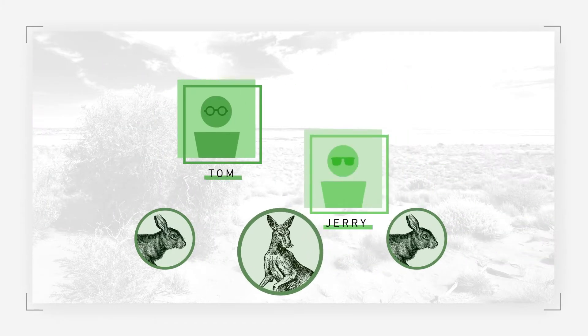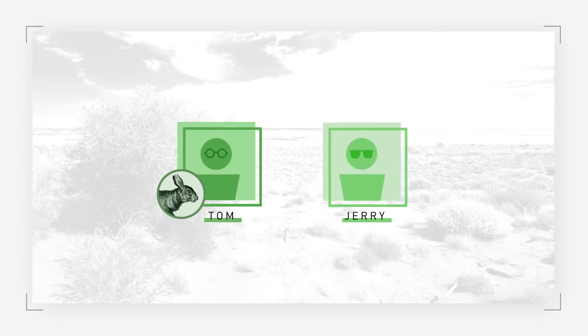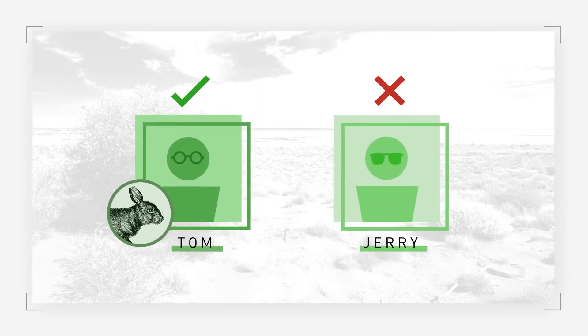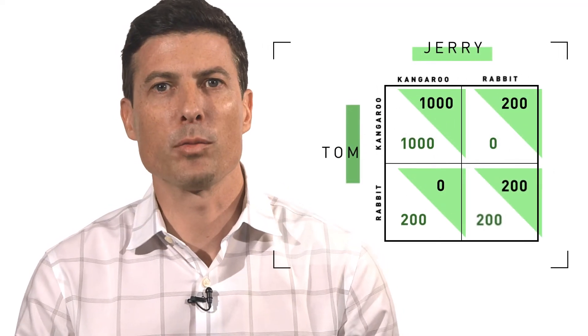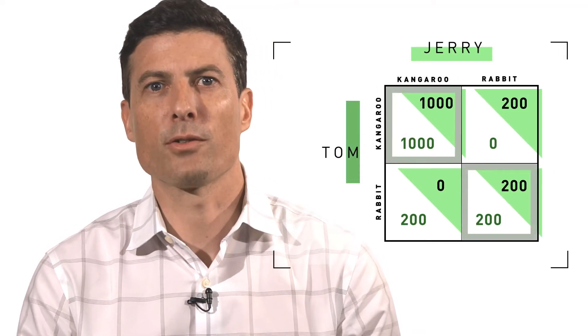If one goes for the kangaroo while the other traps a rabbit, the kangaroo chaser goes hungry. This is an assurance game. It has two equilibria: both chase the kangaroo or both chase the rabbit.